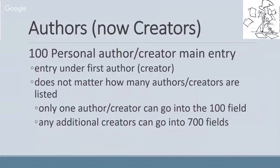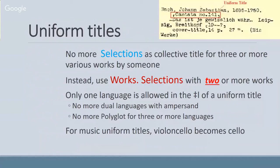Another thing that's changed is with uniform titles, which you'll see in translations, in music, and in groupings. You're not going to use 'selections' as a collective title by itself — if you have a book containing three or more works by someone, you use the word 'works' and then the subfield 'selections.' With languages, we only have one language in the uniform title subfield L — we don't use the term 'polyglot' with RDA if there are three or more languages, and we don't put in dual languages. And for music uniform titles, we now use 'cello' as the instrument designation.